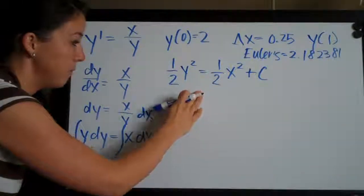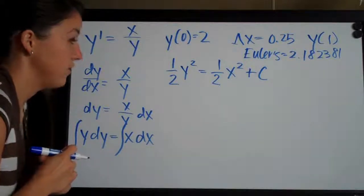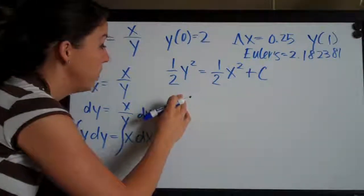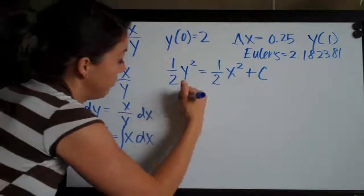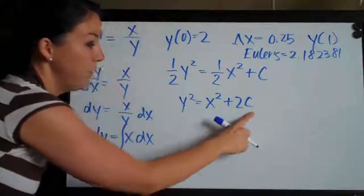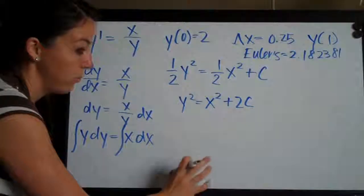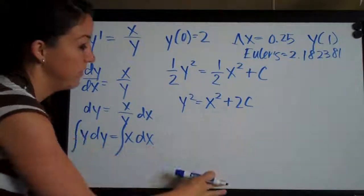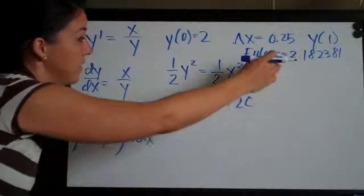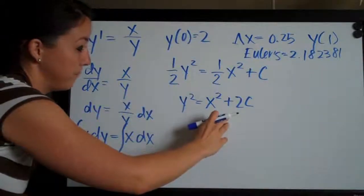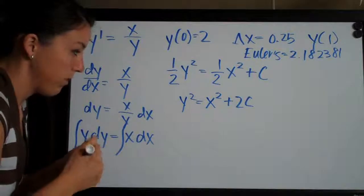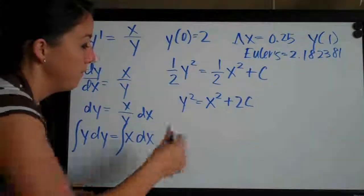So we've integrated and now what we want to do, if we can, is try to solve for y. So we'll multiply both sides of the equation by two. That'll cancel out the one half on both sides and we'll have y squared equals x squared plus two c. And remember that c is an aggregator of the constants in the function. So we're going to end up solving for c. Once we solve for y, we're going to plug in the initial condition here and solve for c. So c is going to accumulate constants together.